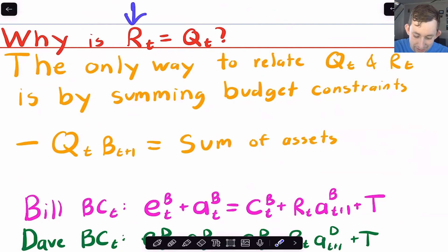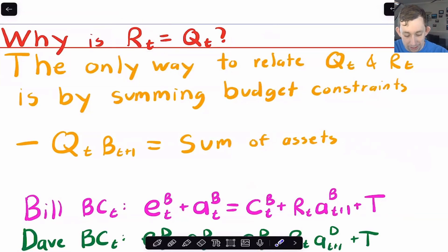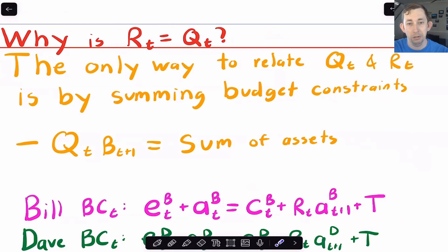Now I want to show why the price of the asset has to equal the price of the bond — intuitively, it's just preventing arbitrage. If the bond price were higher than the asset price, Dave would not buy any bonds and would just borrow from Bill. If the asset price were higher, Dave would take on a lot of government debt to get assets from Bill and make money just by substituting bonds and assets. We don't want that — there should be no arbitrage, no way to profit just by swapping assets. So we need to prove this.